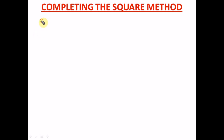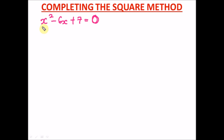In today's example, we're going to treat: x² minus 6x plus 7 equals 0. This is an easy example in the sense that x² doesn't have a coefficient. If it had a coefficient, there would be a particular step we'd have to take — we'll solve that type in the next video.